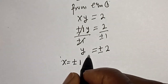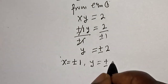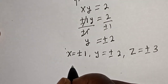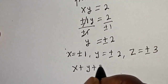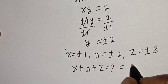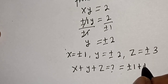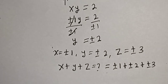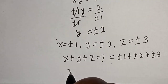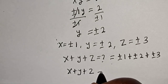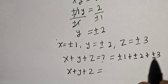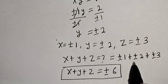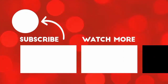So X is plus or minus 1, Y is plus or minus 2, and Z is plus or minus 3. Therefore, X plus Y plus Z is equal to plus or minus 1 plus plus or minus 2 plus plus or minus 3, which gives plus or minus 6. That is the final answer. Before you leave, like, share, comment, and subscribe. Thank you, bye bye.